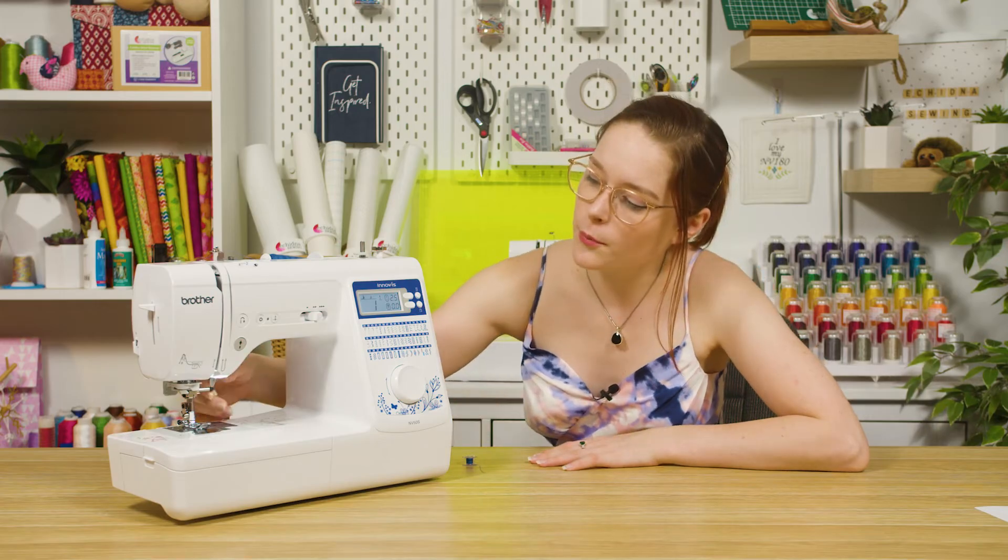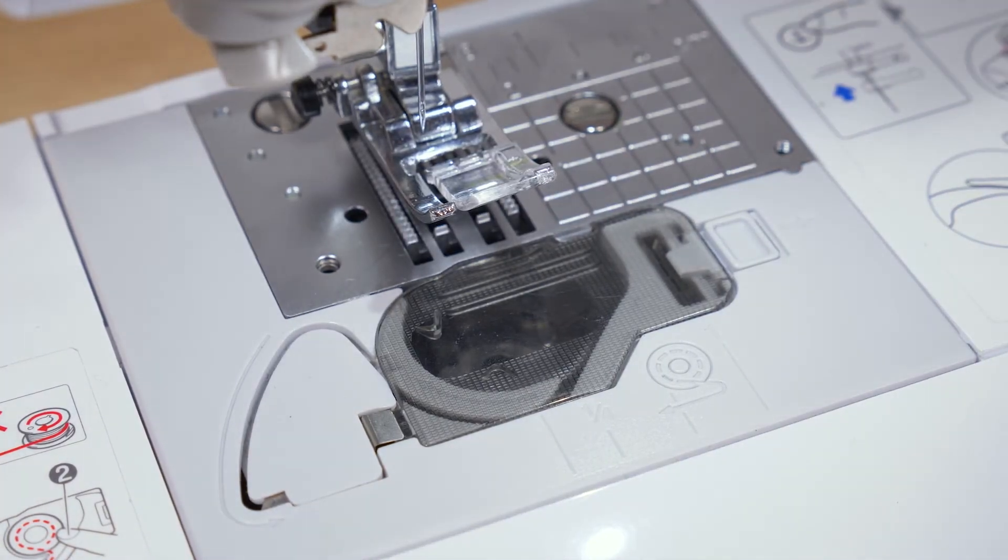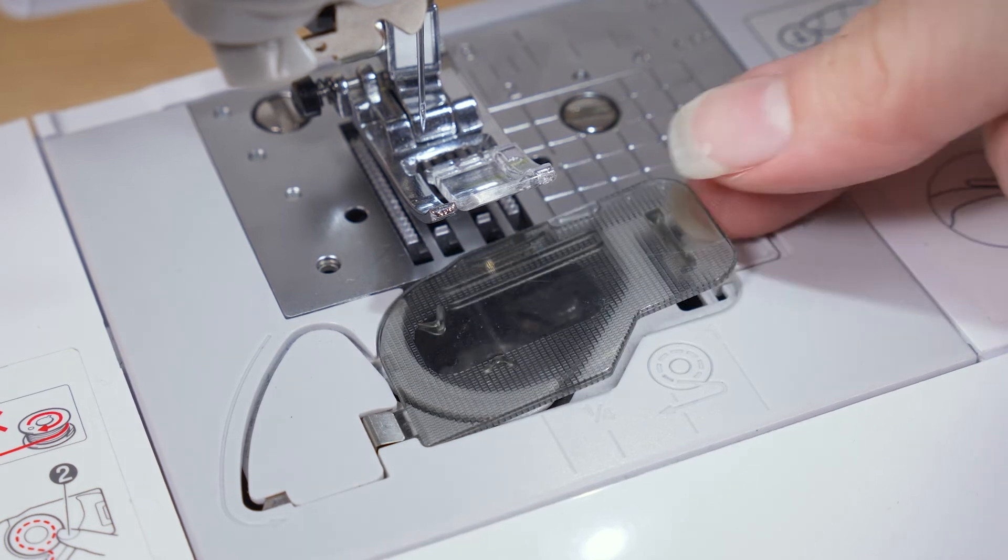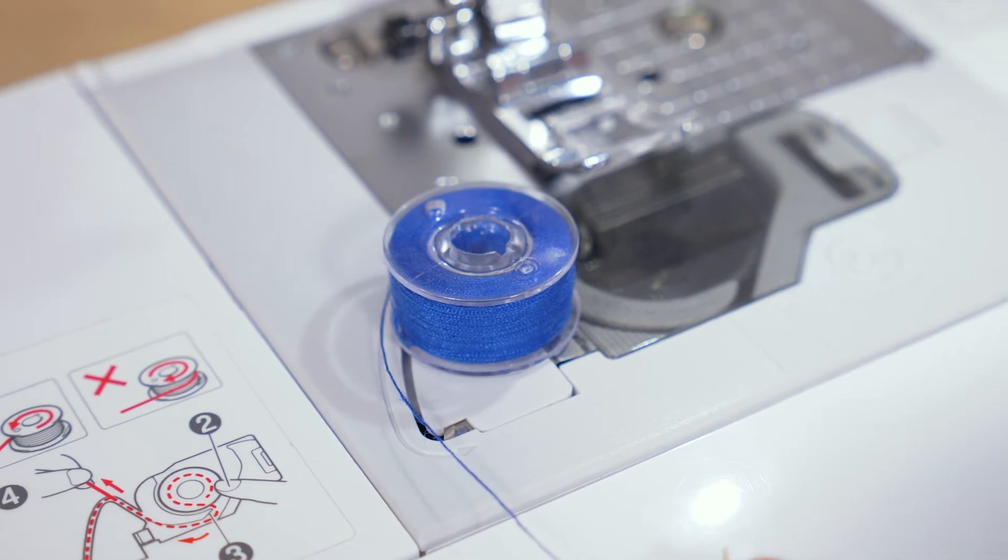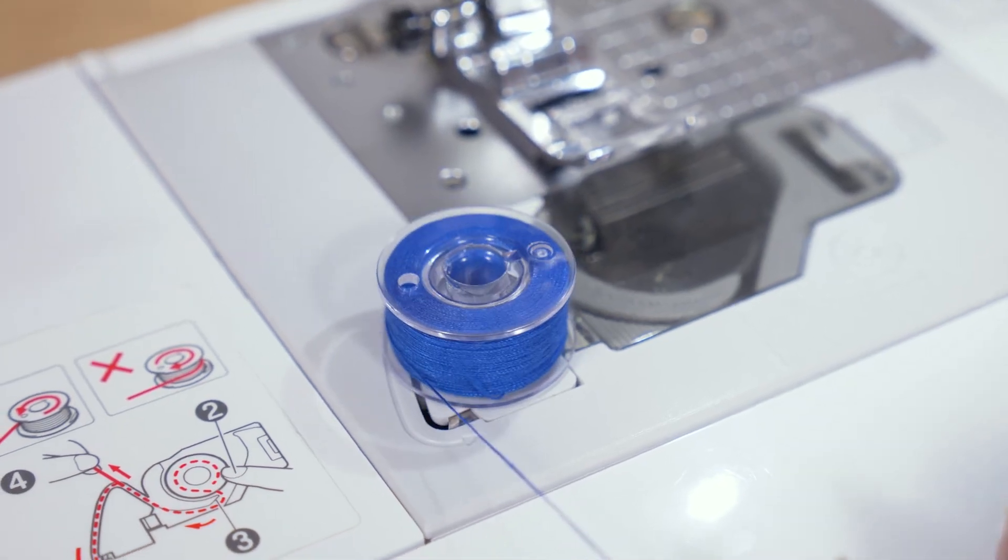Now to put your bobbin into the bobbin case, make sure that your presser foot is up, then you can take the cover off by pulling the latch to the right. Before putting your bobbin in, make sure your thread is coming out anti-clockwise.